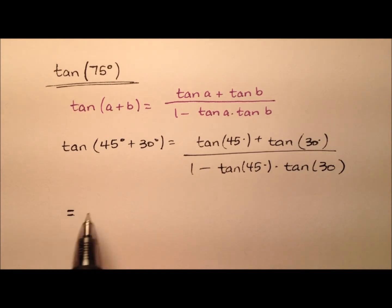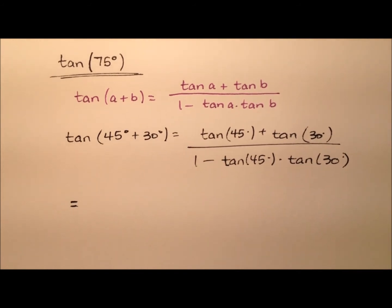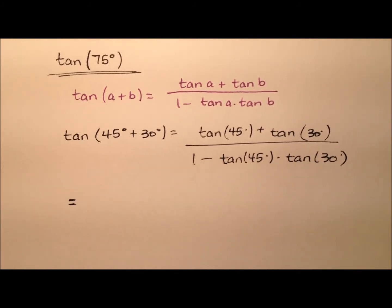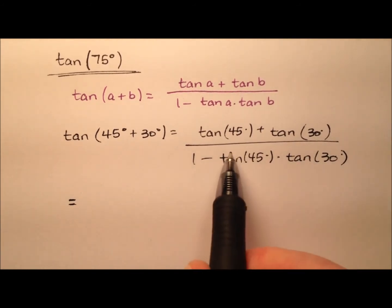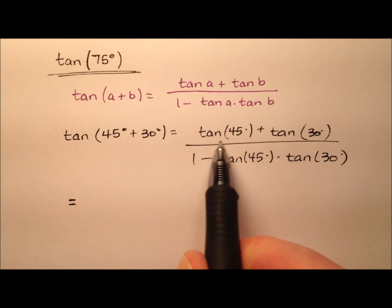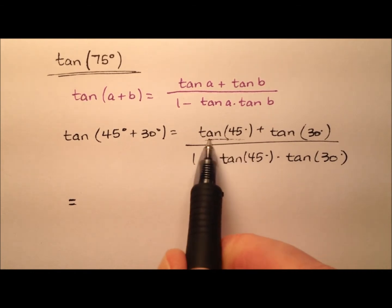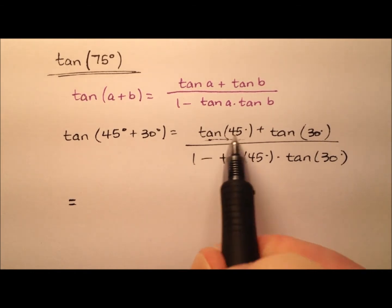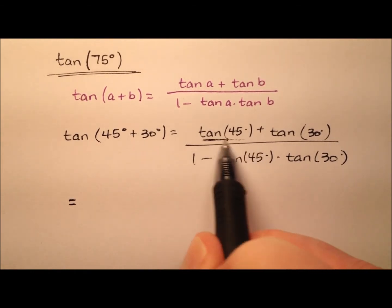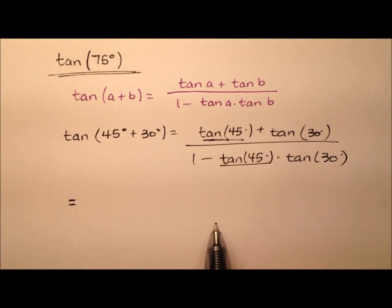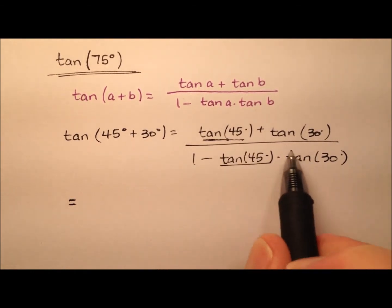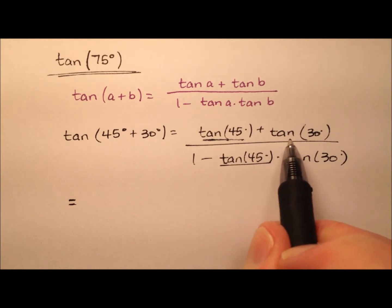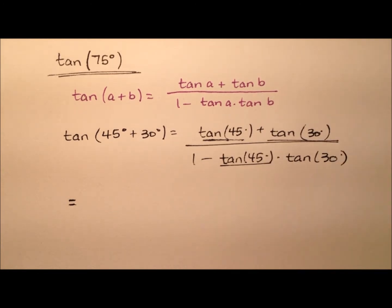Coming down here, let's see numerically what this is going to give us. The tangent of 45 is actually just 1, so I'll put a 1 here and here. And the tangent of 30 is the square root of 3 over 3.